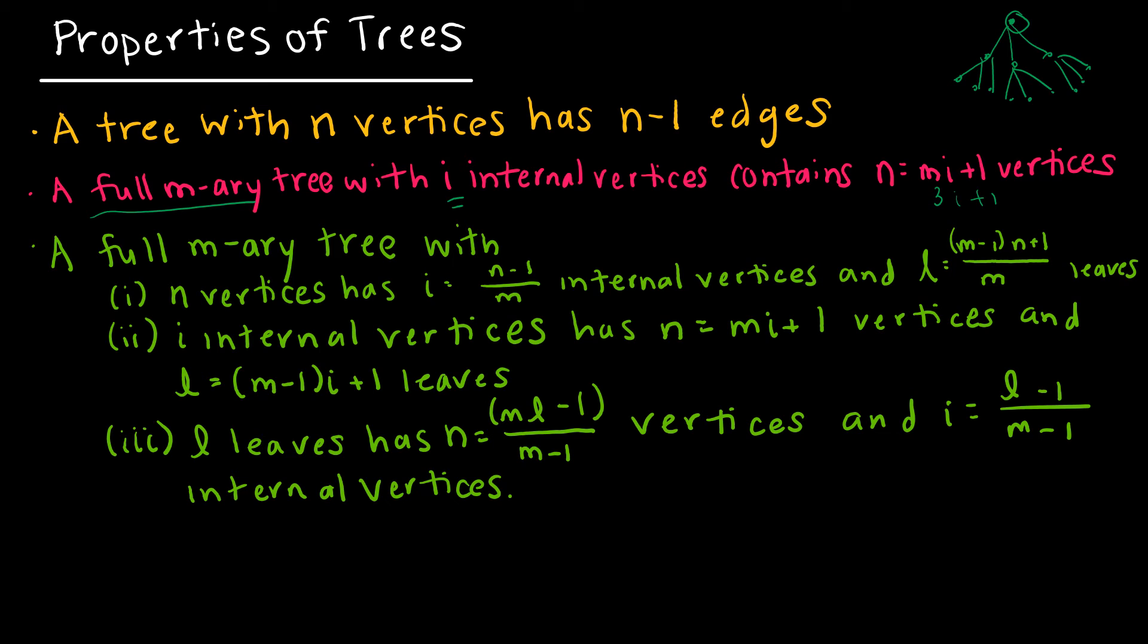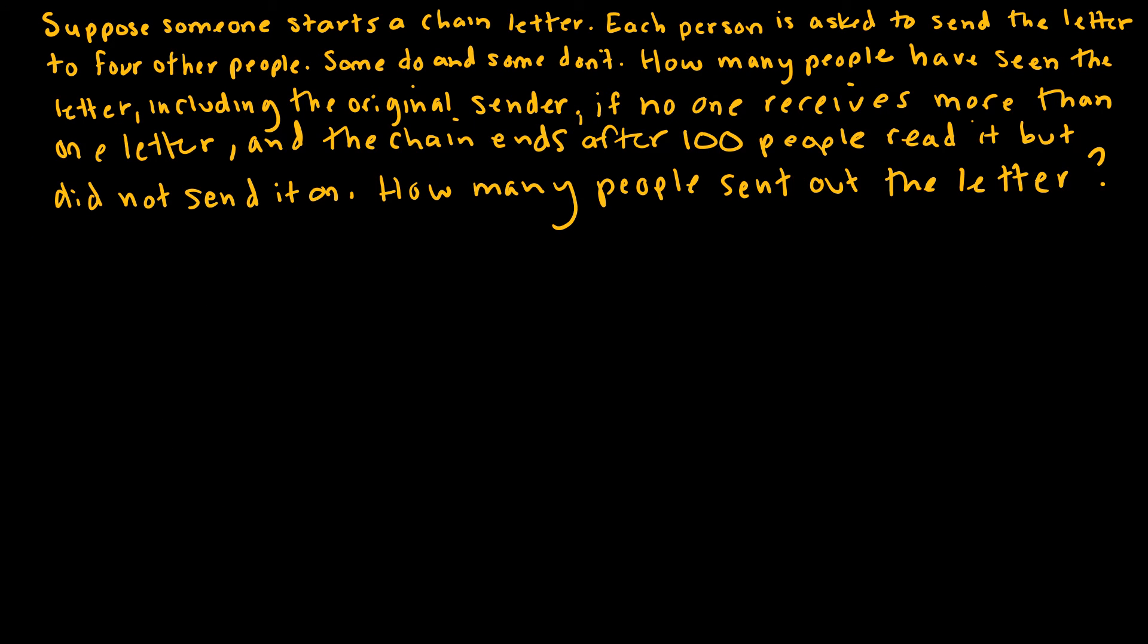And so I just want to show you one example where you might use one of these formulas so that you don't have to draw a giant tree and try to figure out the answer to the question. So I want to look at an application where we might use some of those formulas we just came up with. Suppose someone starts a chain letter. Each person is asked to send the letter to four other people. Some do and some don't. So again, we're looking at four other people. That will be important.